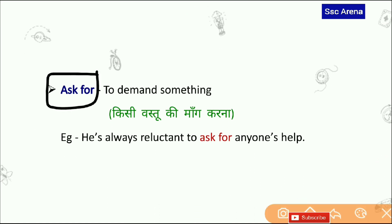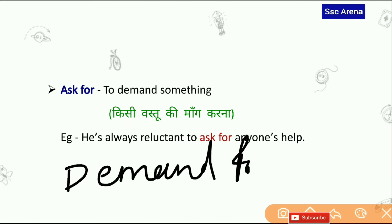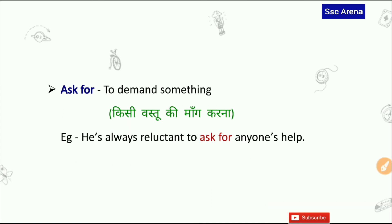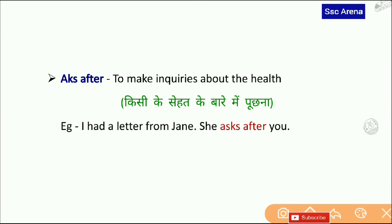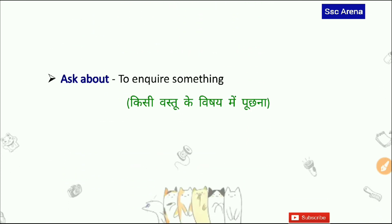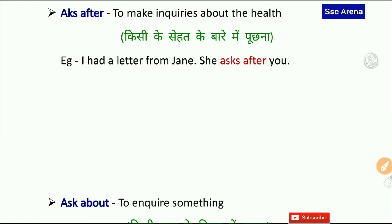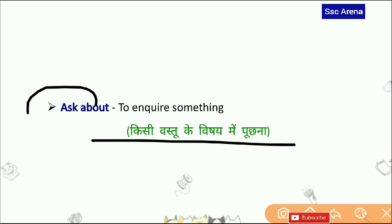Next है — Ask For। यह exam में कई बार पूछा गया है। Ask For का मतलब होता है किसी चीज़ को माँगना — demand for भी बोलते हैं। Ask For is equal to Demand For। Ask After भी बहुत important है — इसका मतलब होता है किसी के सेहत के बारे में पूछना — to make inquiries about the health। Ask About का मतलब है to inquire about something — किसी वस्तु के बारे में पूछना। Ask After किसी व्यक्ति की सेहत के बारे में, Ask About किसी वस्तु के बारे में।